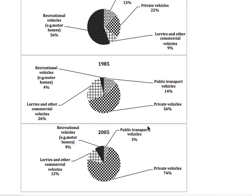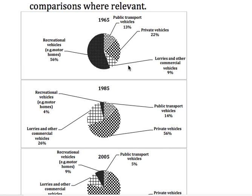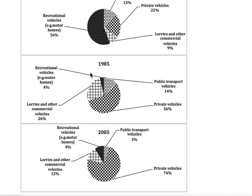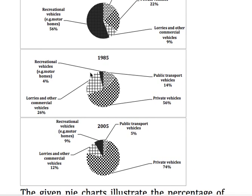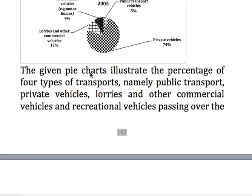You can see three pie charts are given — one is for 1965, one is for 1985, and one is for 2005. There are four types of vehicles which use the main bridge in these years: public transport vehicles, private vehicles, lorries and commercial vehicles, and recreational vehicles.